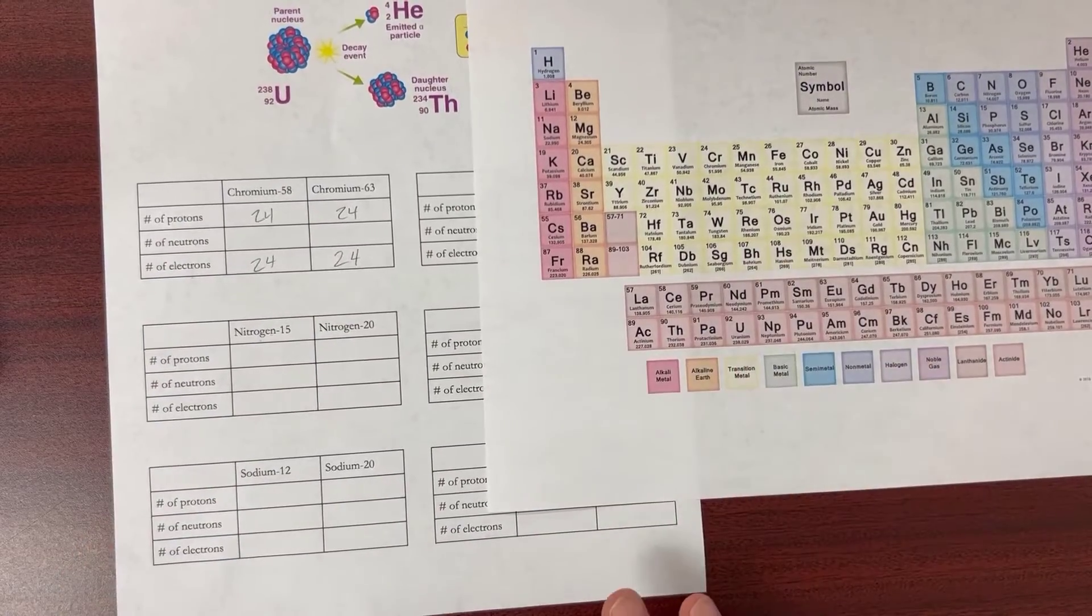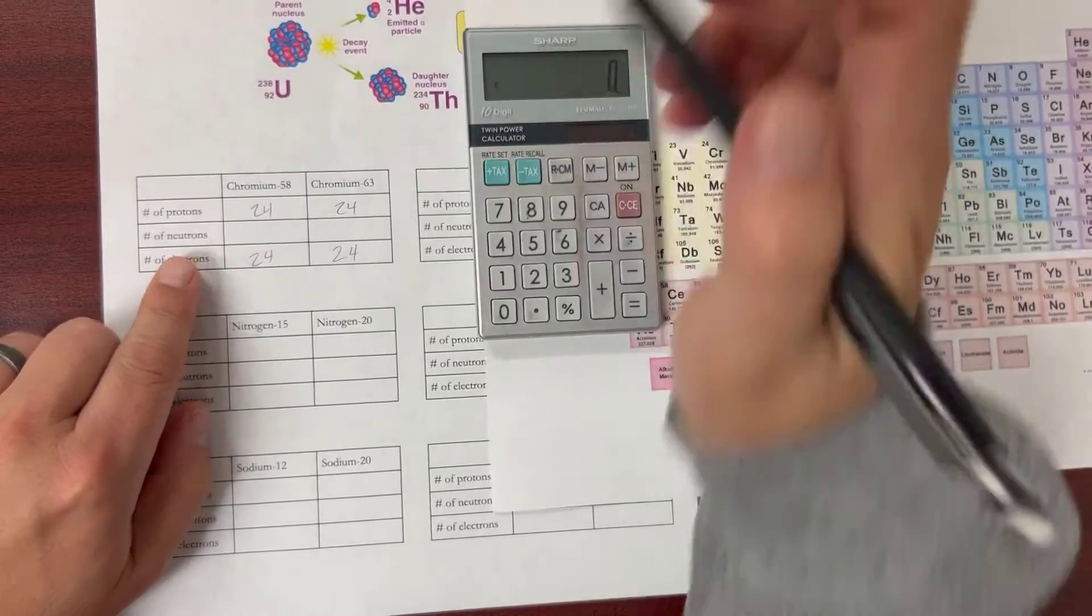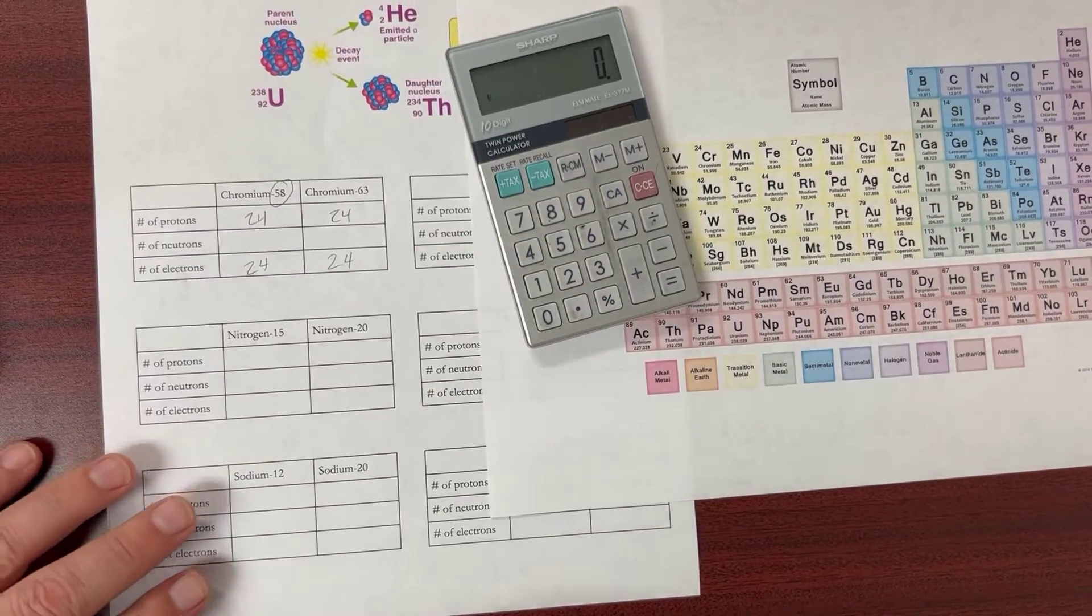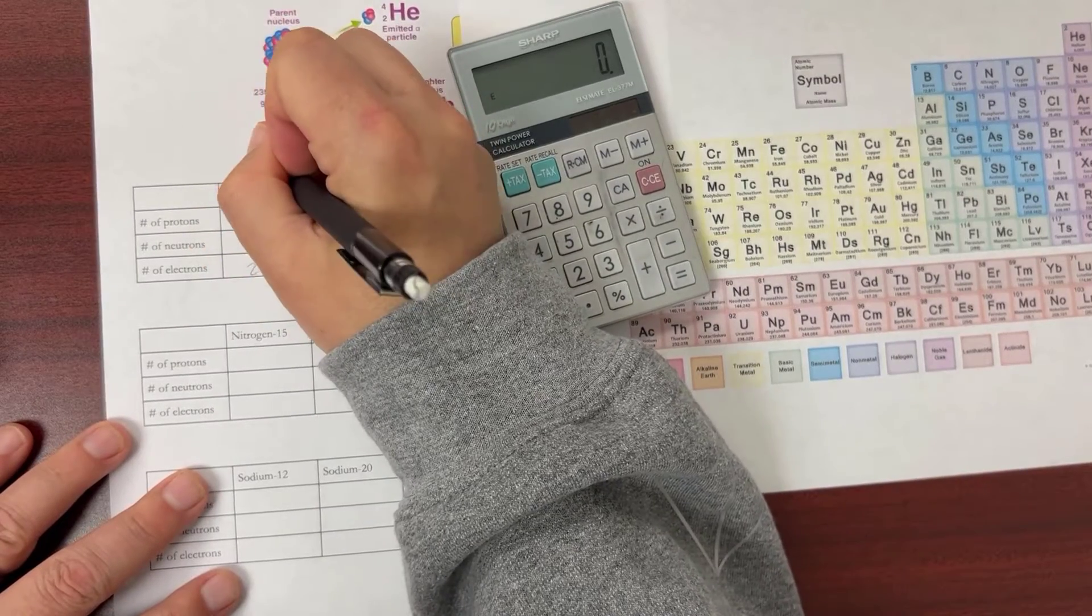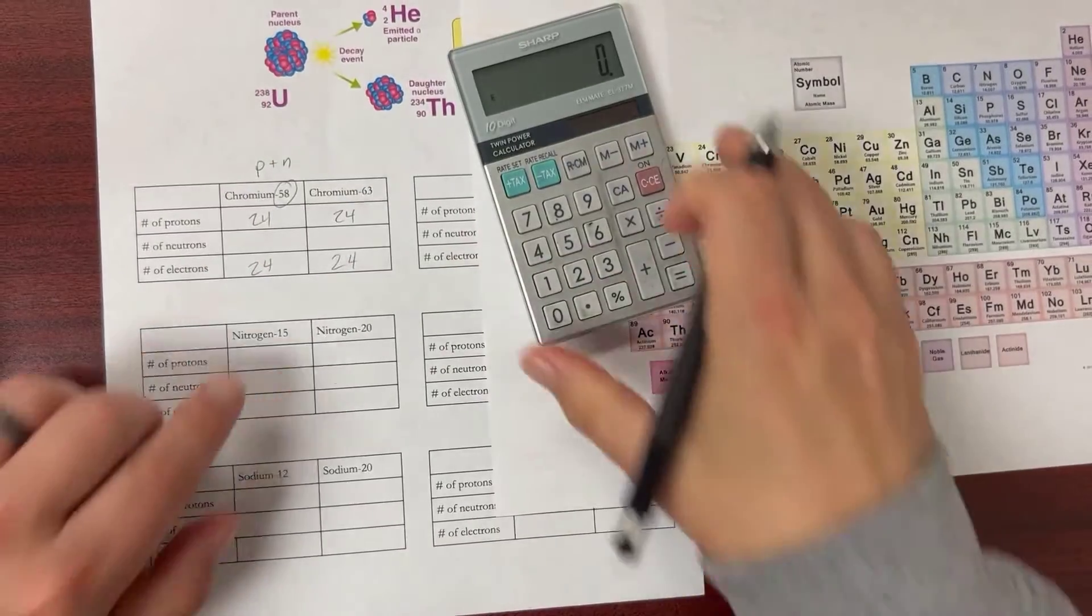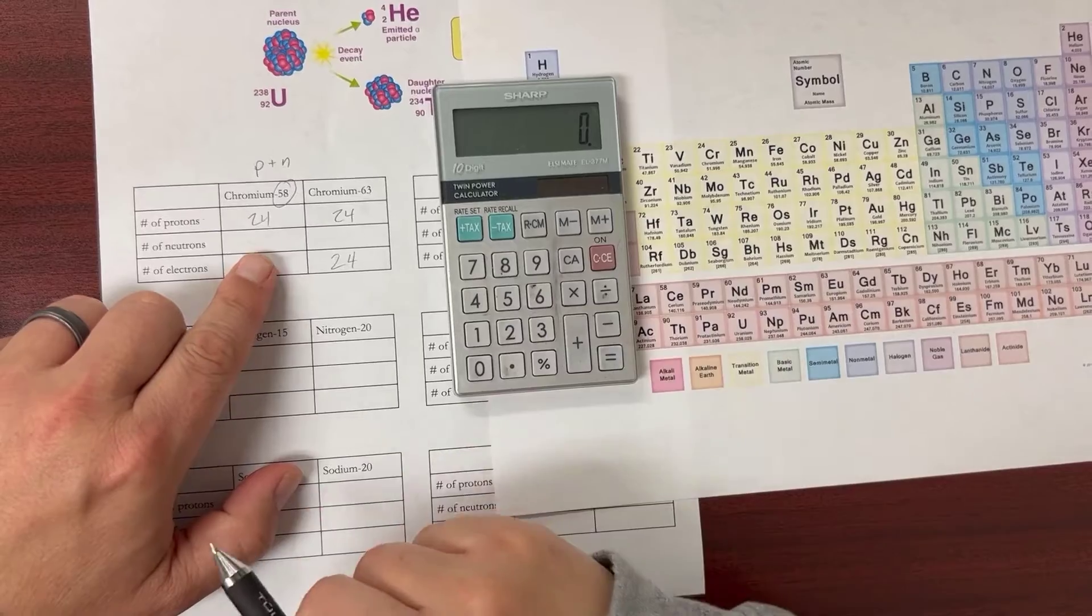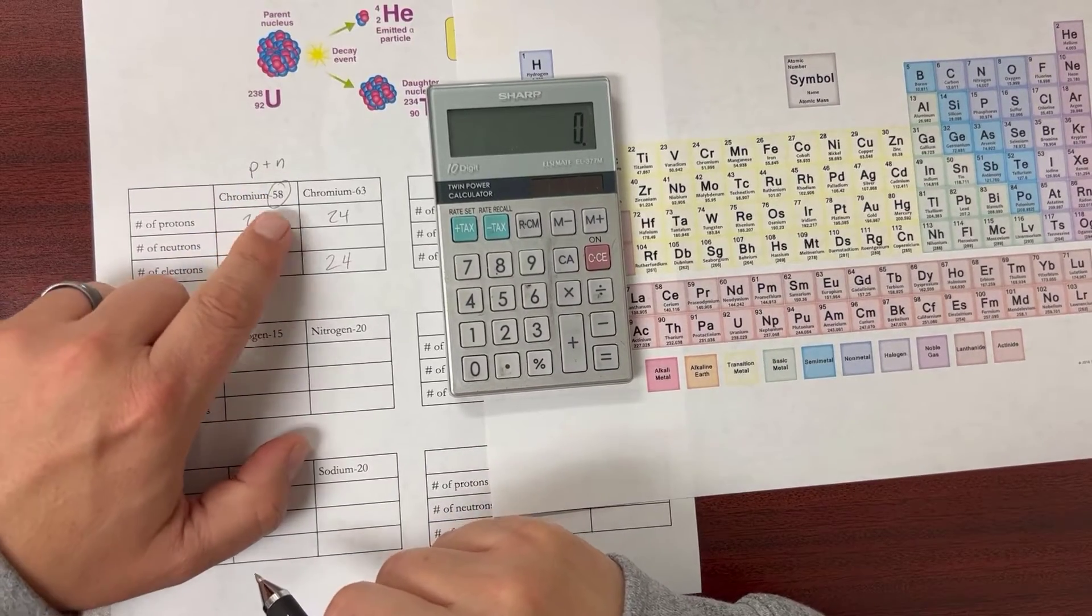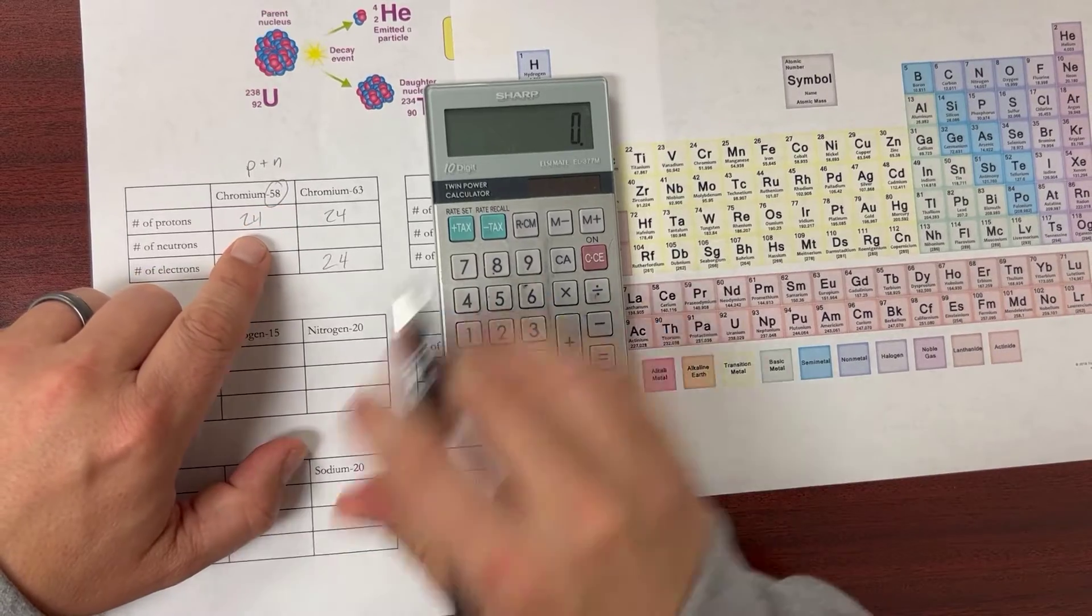To figure out how many neutrons there are, I have to take this number 58—that's the mass, and that's protons plus neutrons. So I know that 24 protons plus some number of neutrons equals 58. I've got 24 + n = 58.